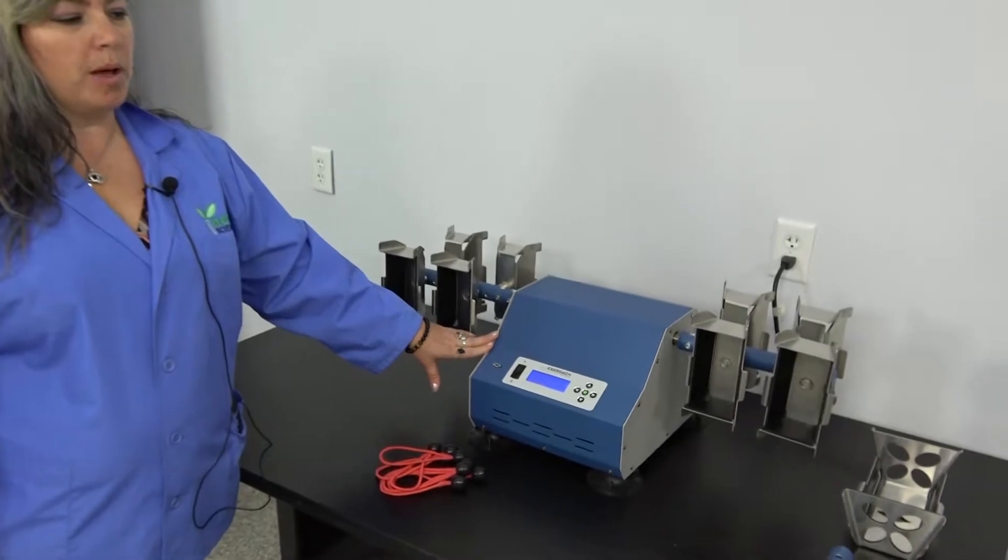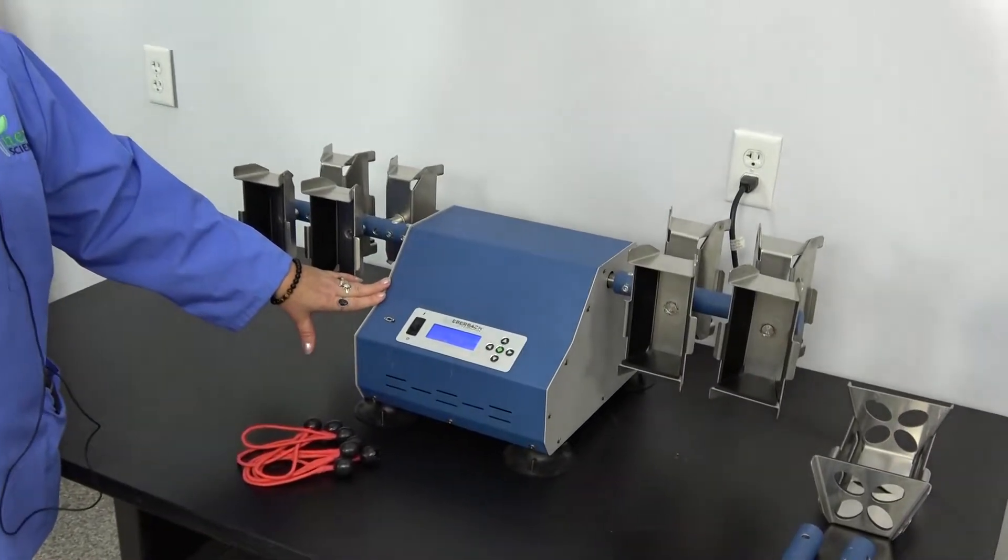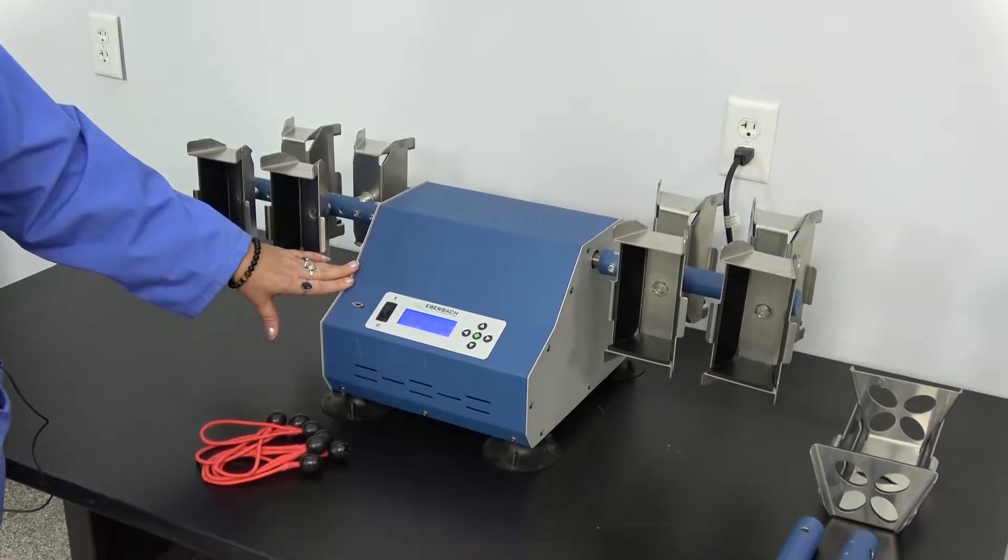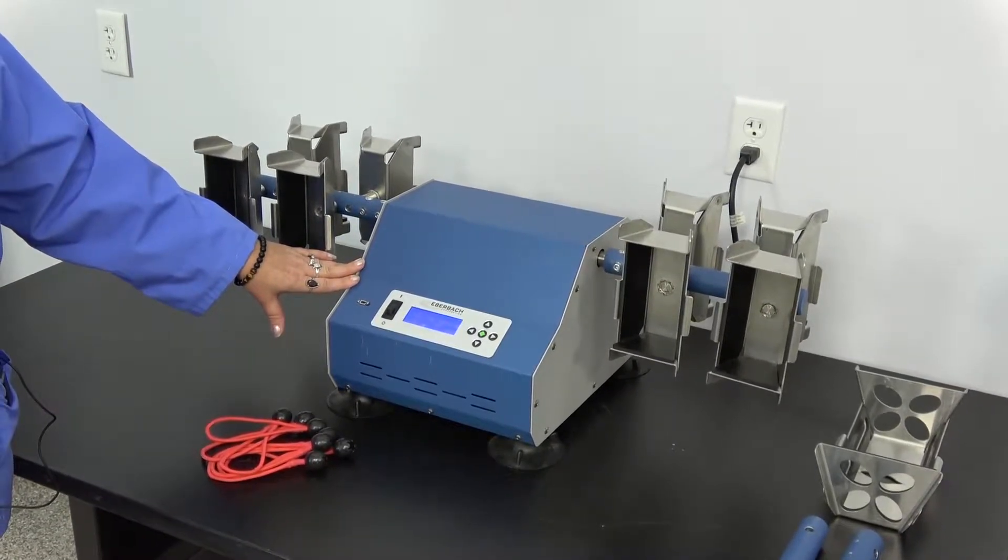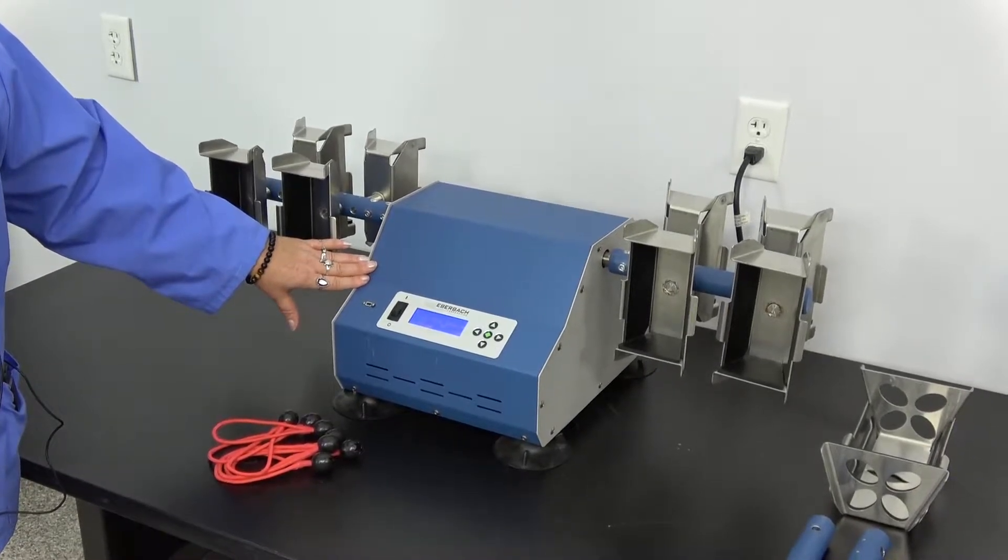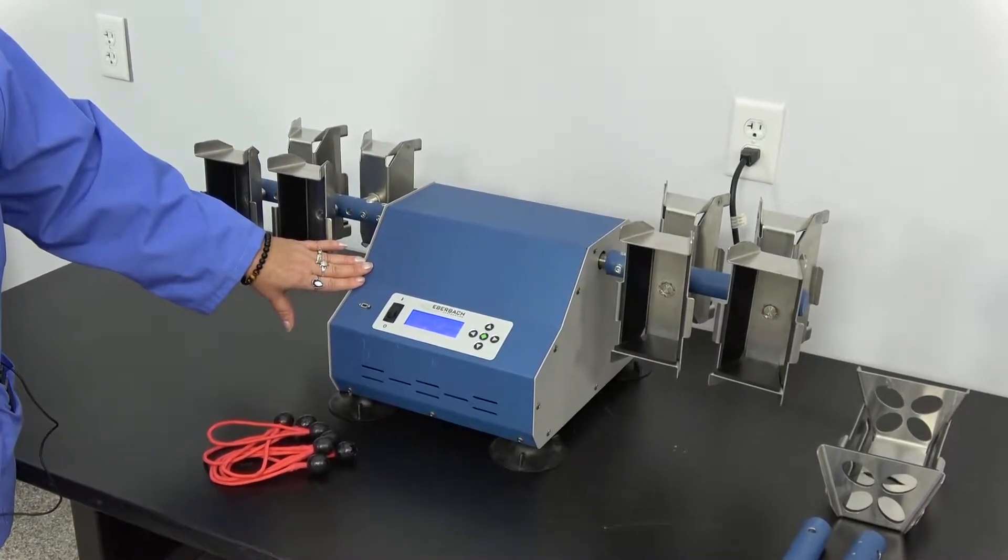This shaker, made by Eberbach, mimics the motion of hand mixing. It can be used for extractions, dissolutions, and emulsifications. This makes the EL680 a great addition for research labs with medium to high throughput of samples.